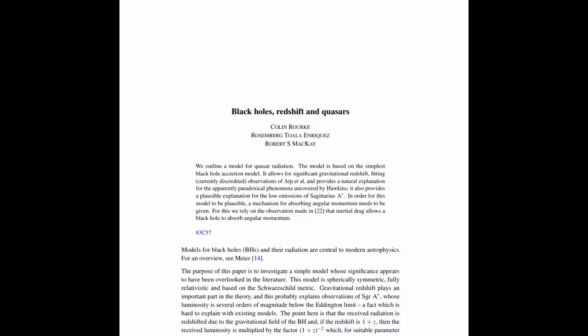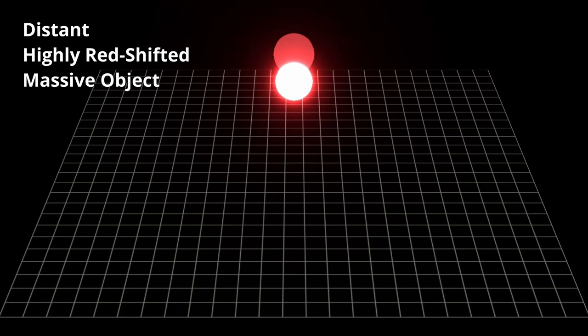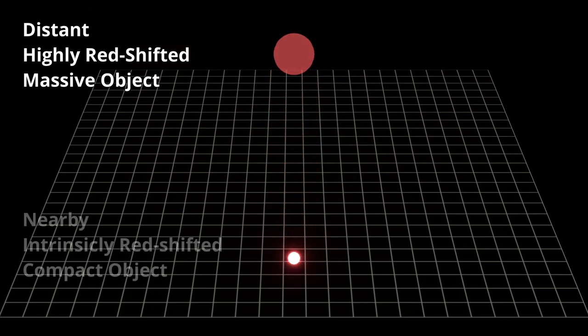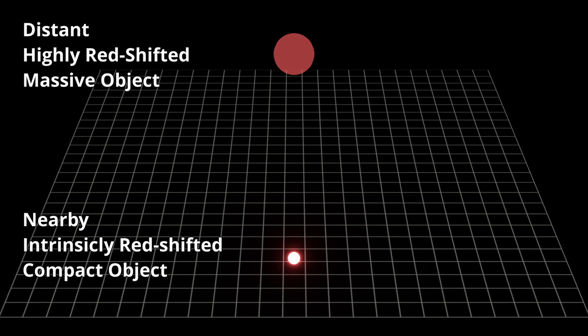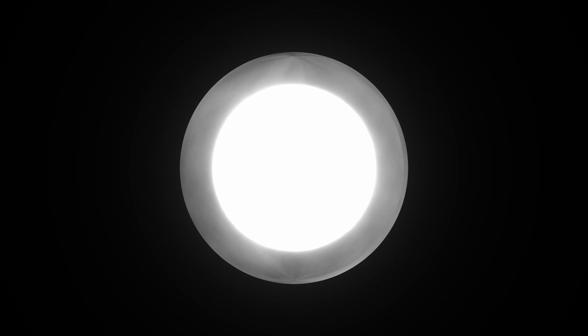They go into a lot of detail outlining their model but to summarize quasars are not distant objects but are instead objects which are much closer. They have a black hole at the center and they do not have an accretion disk and the redshift that we observe is intrinsic and is created via gravitational redshift.